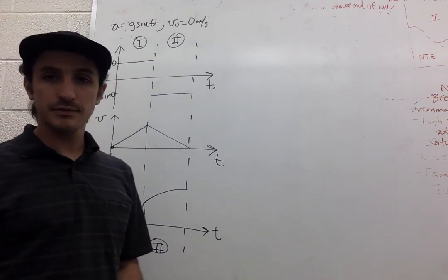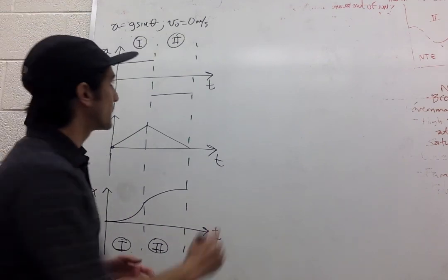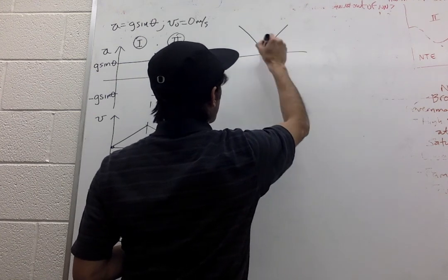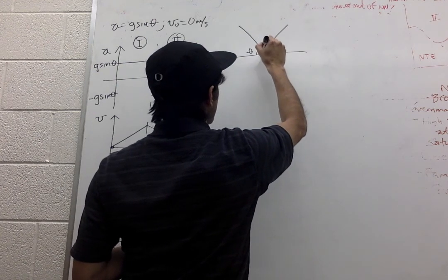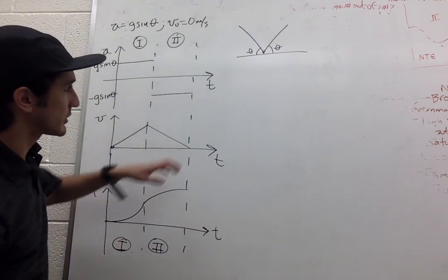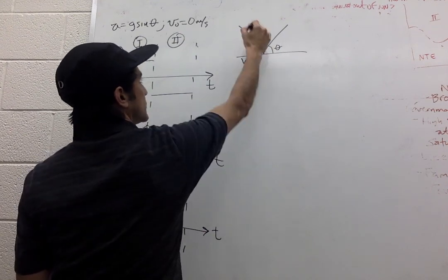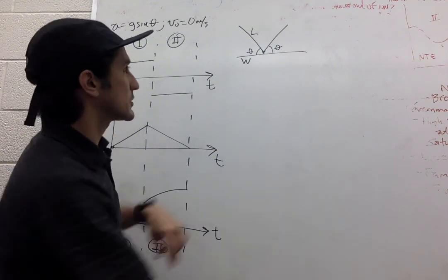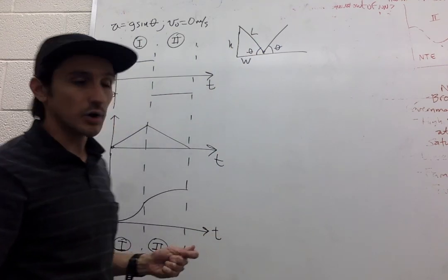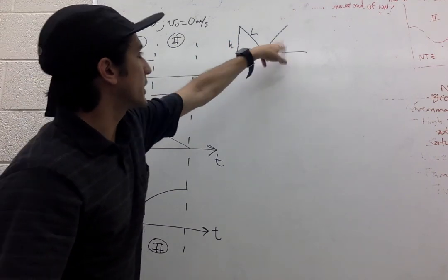We have a few more constraints in this problem. We know that the situation looks like this: we have theta over here, this is W, this is L, we can call this H if we want. So this is a right triangle over here.